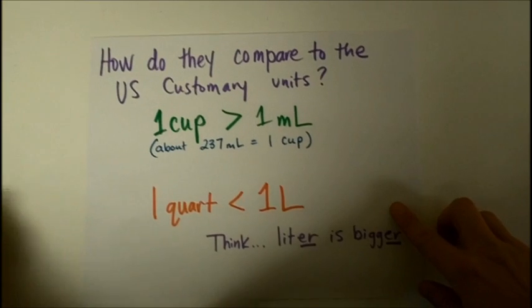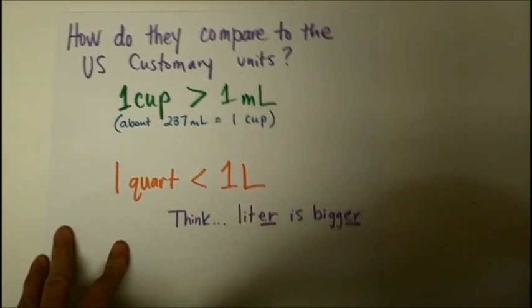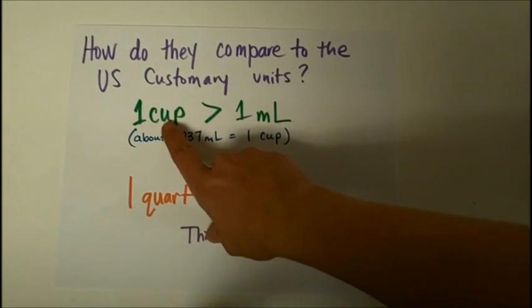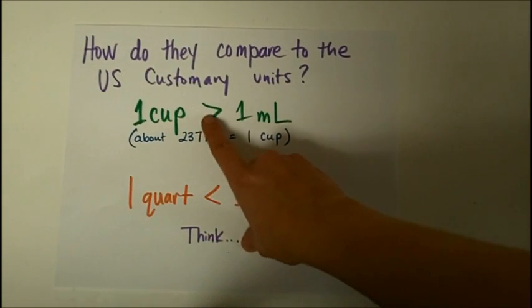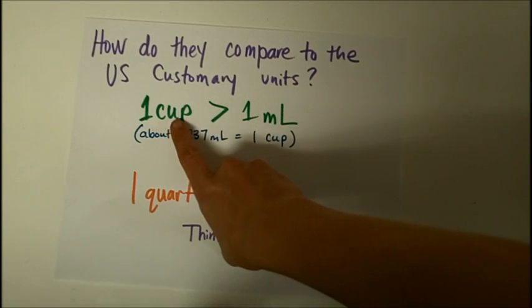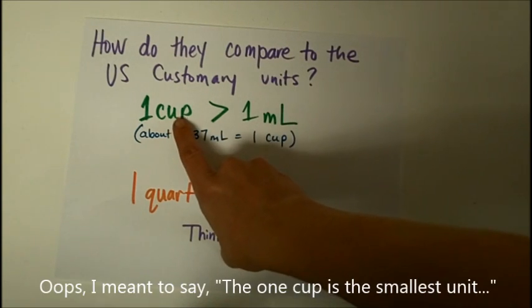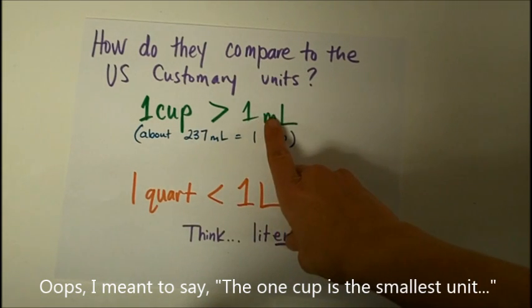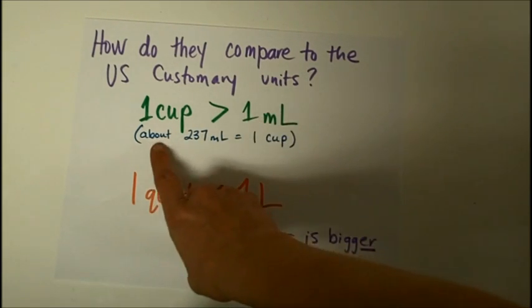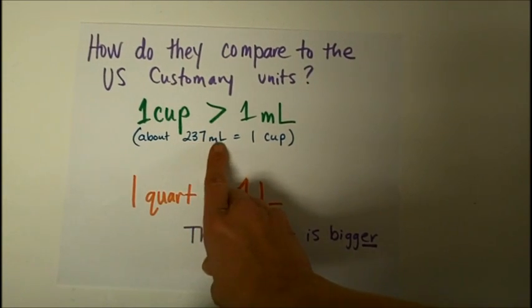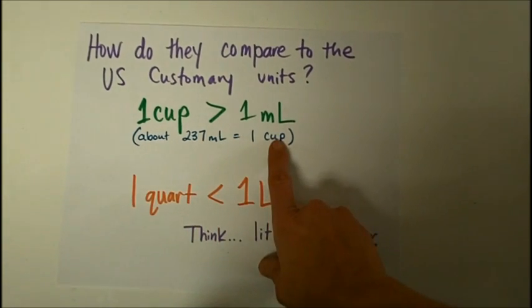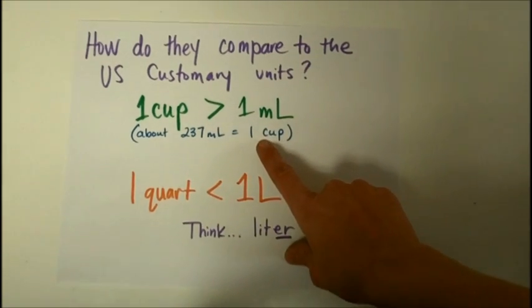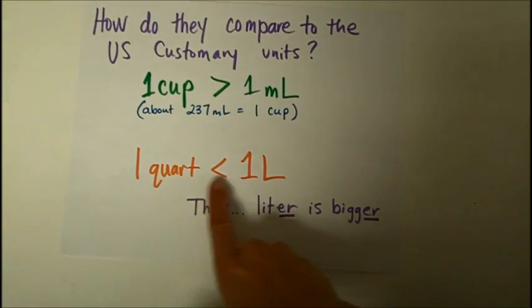You might be wondering how the liter and milliliter compare to the U.S. customary units that we learned in the last video. Well, it's pretty obvious to see that one cup is definitely bigger than the milliliter. But we also know that there are teaspoons and tablespoons. All of those are bigger than 1 milliliter. If you're curious about the details, I looked it up, and it takes 237 milliliters to make one cup. So 237 of those droppers would equal one cup.